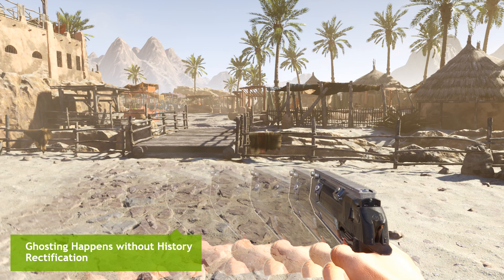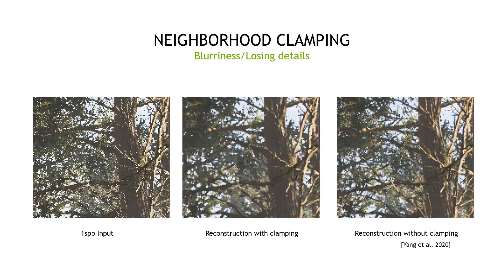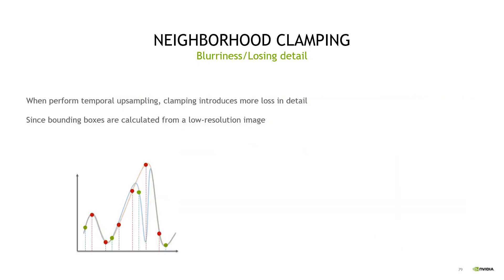Let's visually demonstrate some of what we've been discussing about temporal supersampling and history rectification. This is an image rendered with TAA but with neighborhood clamping disabled. When panning the camera to the right, causing some disocclusion, we have a huge amount of ghosting left on screen — this type of result is definitely not acceptable for any shipping game, so we definitely need history rectification somehow. However, when we do apply neighborhood clamping, it actually introduces some additional loss of detail in the final reconstruction. Just compare the middle image with the image on the right — which is reconstruction without clamping. In all the foliage, there's just more detail in the version without clamping.